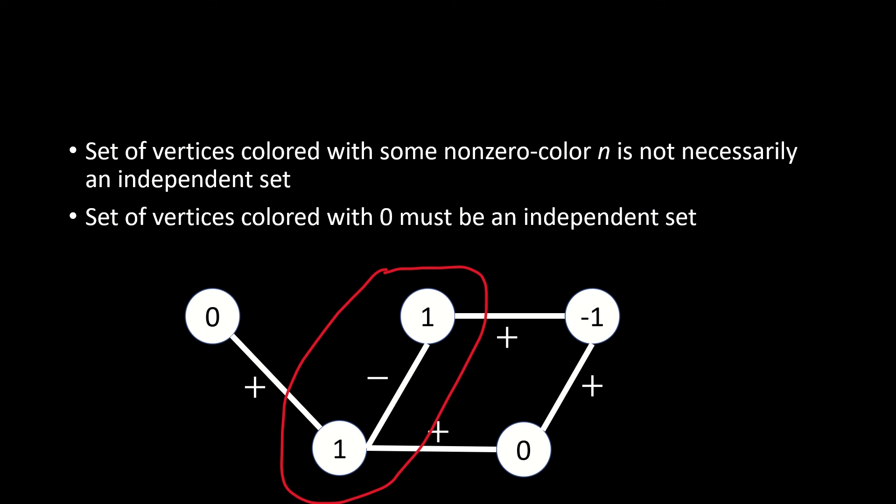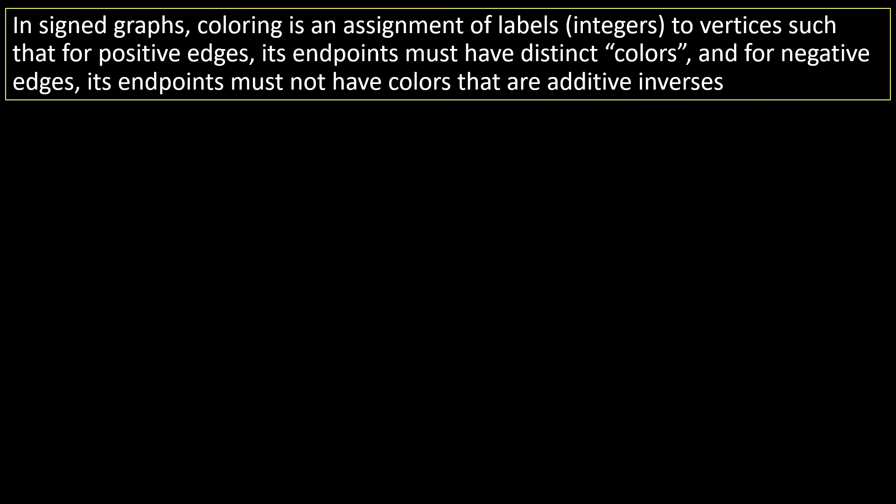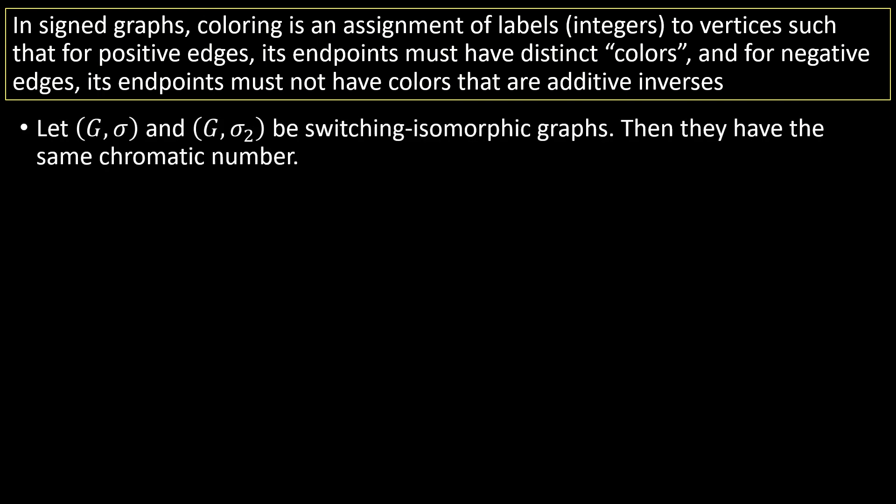One reason why the definition of sign graph colorings presented in this video is useful is because these coloring rules behave nicely under the switching operation, which is where we switch the signs of all the edges adjacent to some vertex. If we have some sign graph G-sigma and any sign graph G-sigma-2 obtained through any applications of the switching operation to G-sigma, then G-sigma and G-sigma-2 have the same chromatic number.